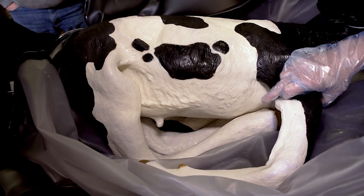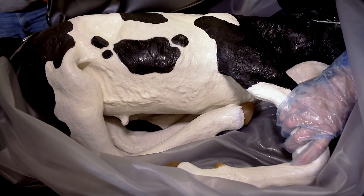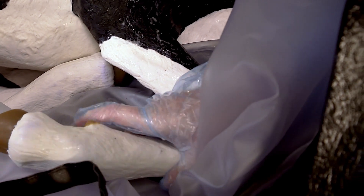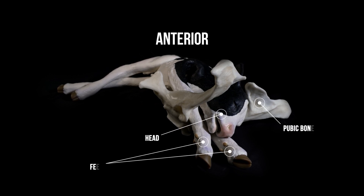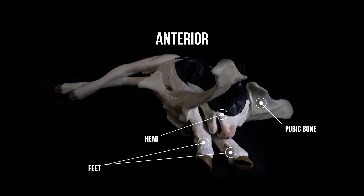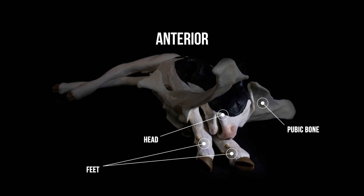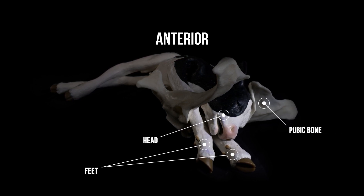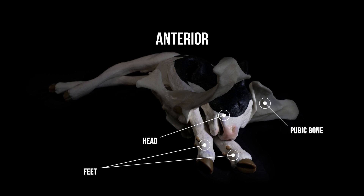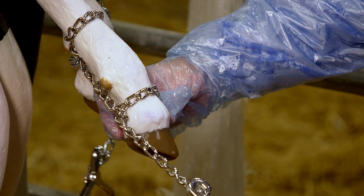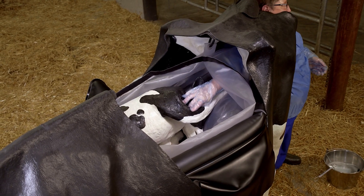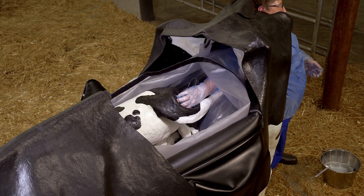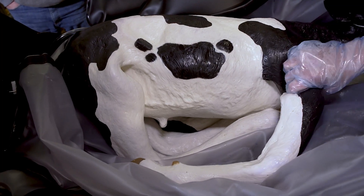Feel for the legs of the calf and follow the orientation and number of leg joints and how they flex to determine whether these are the front or rear legs. An anterior presentation, commonly known as a forward presentation, is when the head and two front feet of the calf are in the birth canal with the spine of the calf resting against the underside of the cow's spine. The two joints closest to the front hoof bend the same way. Feel for and follow the length of the legs to the body on either side of the tail to confirm they are the front legs.